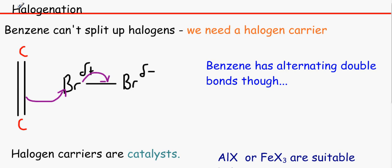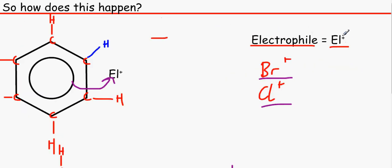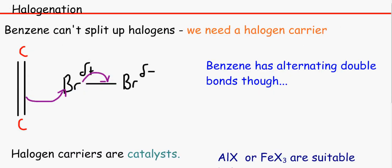But benzene can't split up halogens. As you can see over here, this electrophile was already been split up. You wouldn't find bromine plus, you wouldn't find bromine ions and chlorine ions just sitting there, because they come as diatomic molecules. Everything on group 7 is a diatomic molecule.